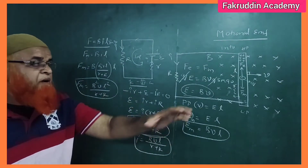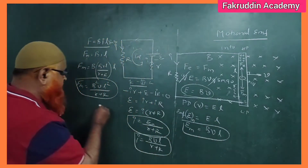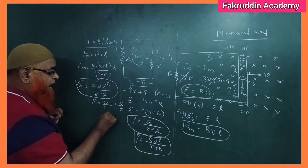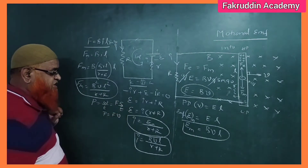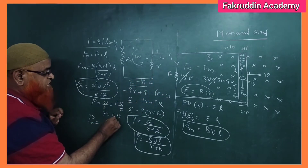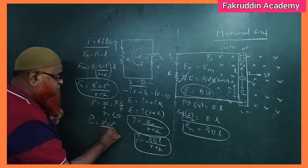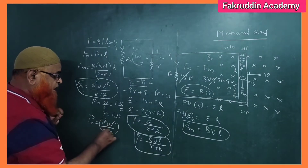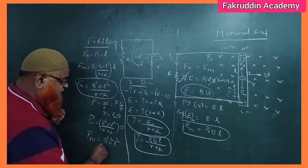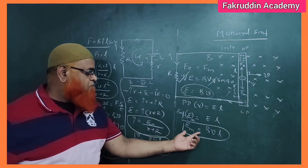To find the power developed due to the motion of the rod, recall that power equals force times velocity. Substituting the force formula, power = FM × V = B²VL²/(r+R) × V. Therefore, the power due to Motional EMF is P = B²V²L² / (r + R). So we have derived the current, force, and power due to Motional EMF.